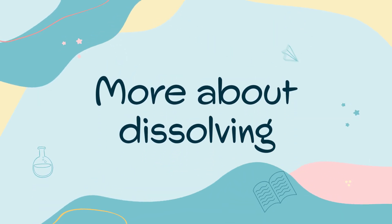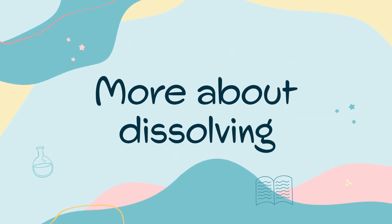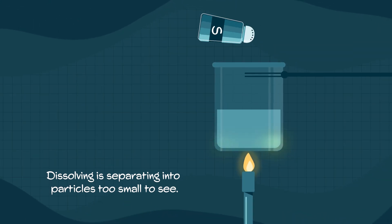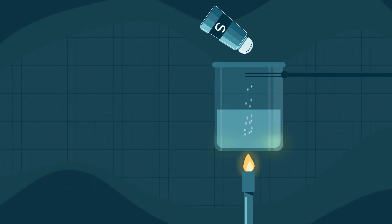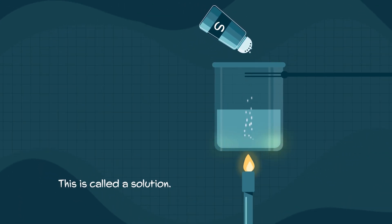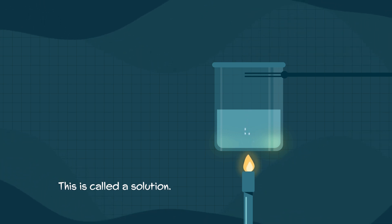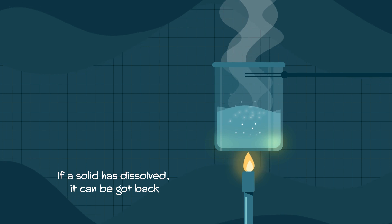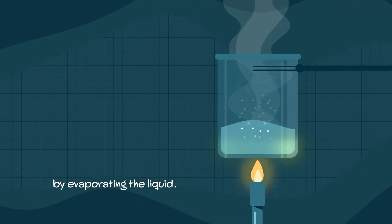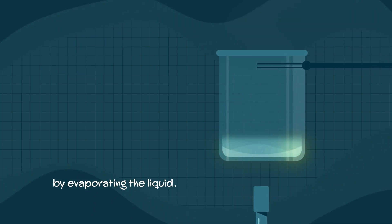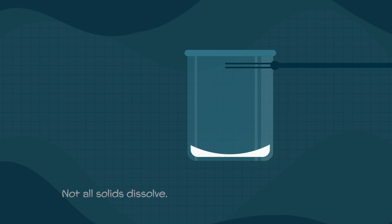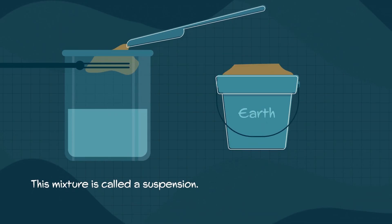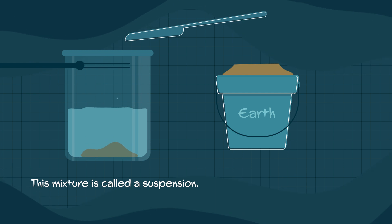More about dissolving. Dissolving is separating into particles too small to see. This is called a solution. If a solid has dissolved, it can be got back by evaporating the liquid. Not all solids dissolve. This mixture is called a suspension.